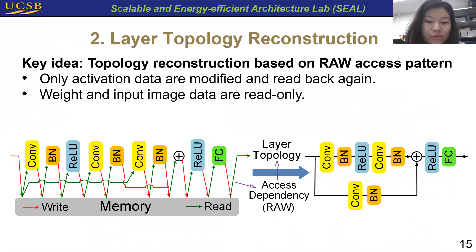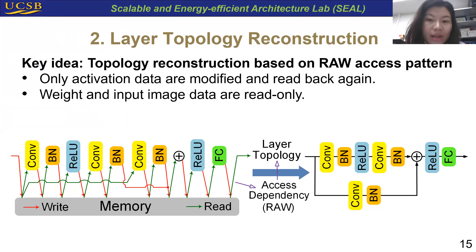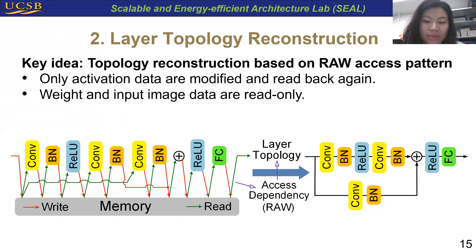The second step is to reconstruct the layer topology. When a layer reads data being written by the previous layer, there is an interconnection between these two layers. Therefore, we leverage the read-after-write access pattern to identify the layer topology. This is based on the observation that activation data are modified and read again, while weight and input image data are read-only and will not exhibit this access behavior. We have no need for complete memory requests to identify such behavior, which makes it robust to actual noises.